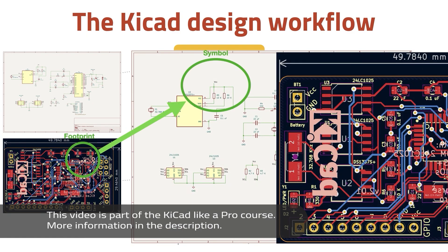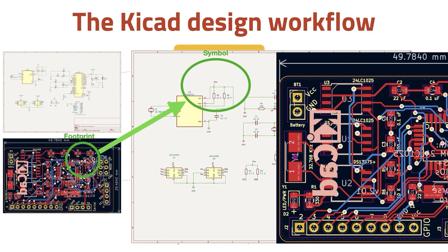Let's focus on some terminology. A symbol is a symbolic representation of a real component in the schematic. A symbol represents a component's function, not its physical appearance or location in the final PCB. A footprint is a graphical depiction of a real component in the layout. It relates directly to a real physical counterpart and contains information about the real component's location and dimensions. You, as a designer, must tell KiCad which footprint you want to use in your PCB by associating it to a particular symbol. For example, a resistor uses a specific symbol in the schematic, but on the PCB it can be realized as a through-hole or SMT device of varying sizes.